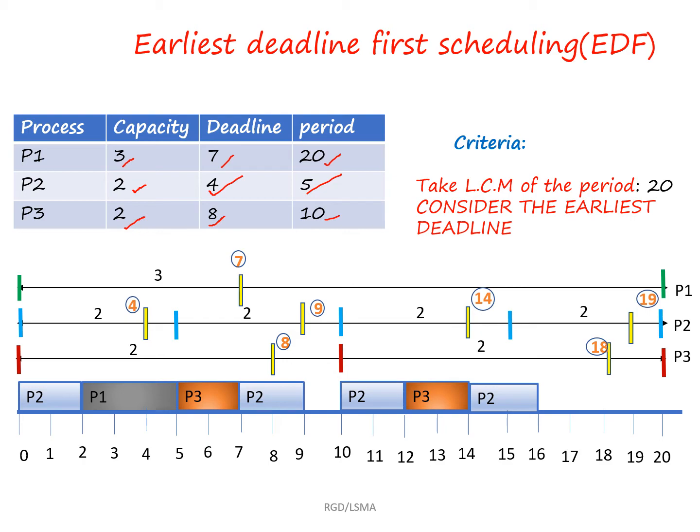Now we'll see how to allocate these processes in the scheduling. The first criterion of Earliest Deadline First scheduling is to take the LCM of the periods: 20, 5, and 10. The LCM is 20, which defines the overall scheduling time from 0 to 20.